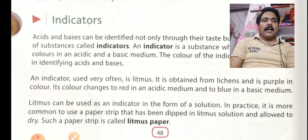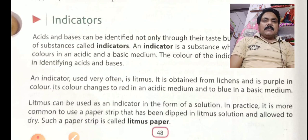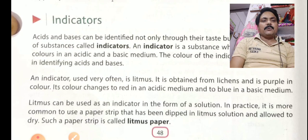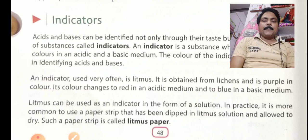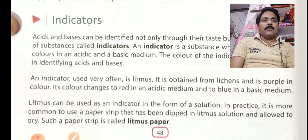An indicator used very often is litmus. It is obtained from lichens, which are a type of plant, and it is purple in color. Its color changes to red in acidic medium and blue in basic medium. So litmus gives a red color with acid and a blue color when dipped in a base. Lichens can be used as an indicator in the form of a solution.